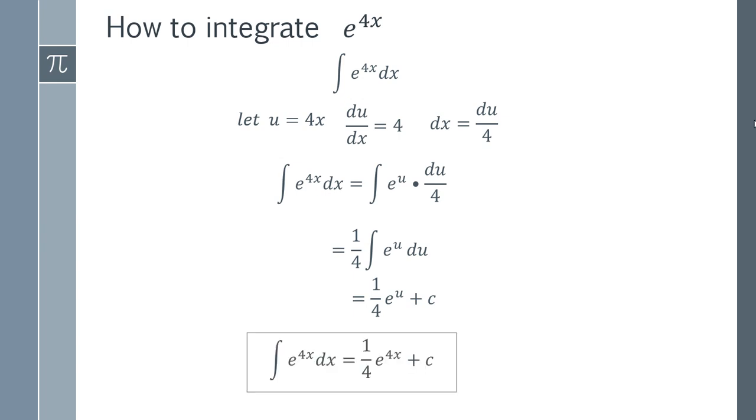And that is actually our final answer. So a trick to remember is when you're doing e to the power of a constant times x, the constant simply moves to the bottom here, and the e to the power doesn't change. And that gives you the integration straight away.